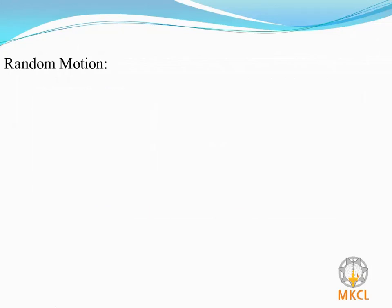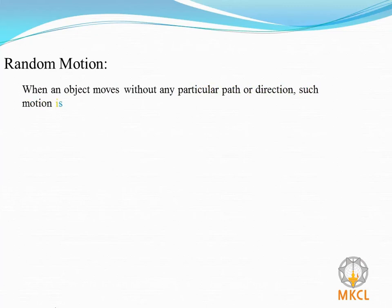Let us see what is a random motion. When an object moves without any particular path or direction, such a motion is known as a random motion. Let us see some examples of random motion.